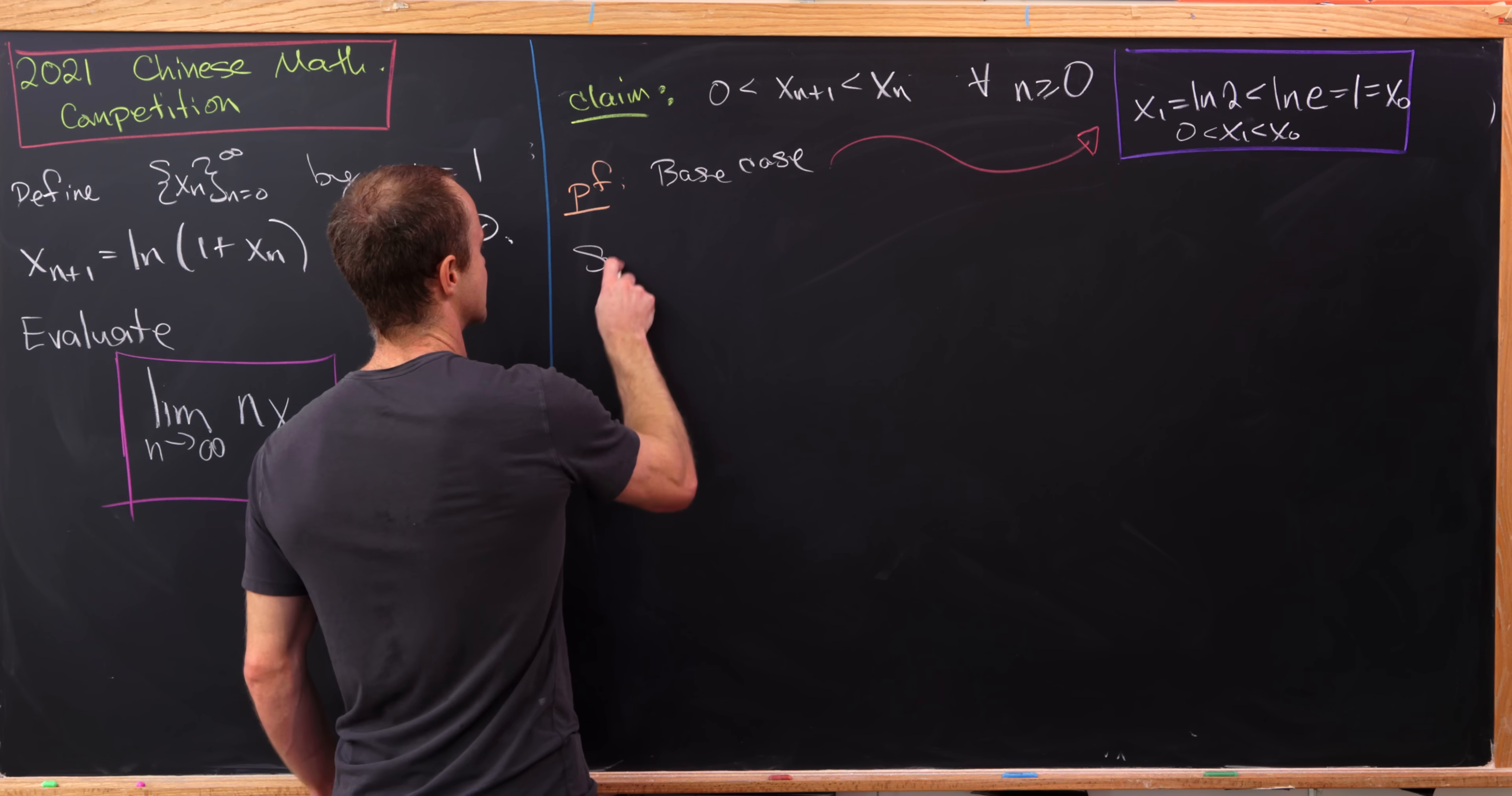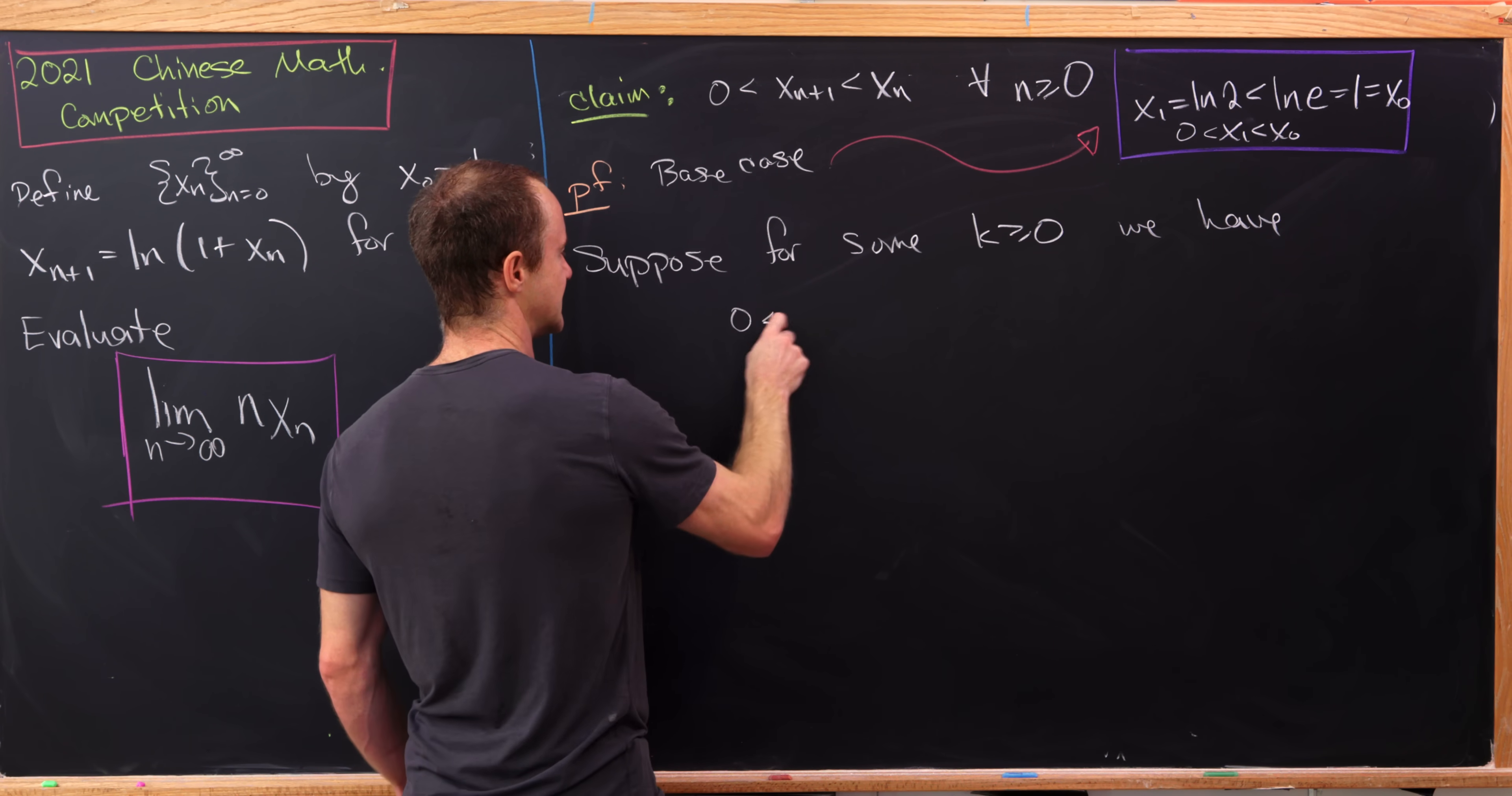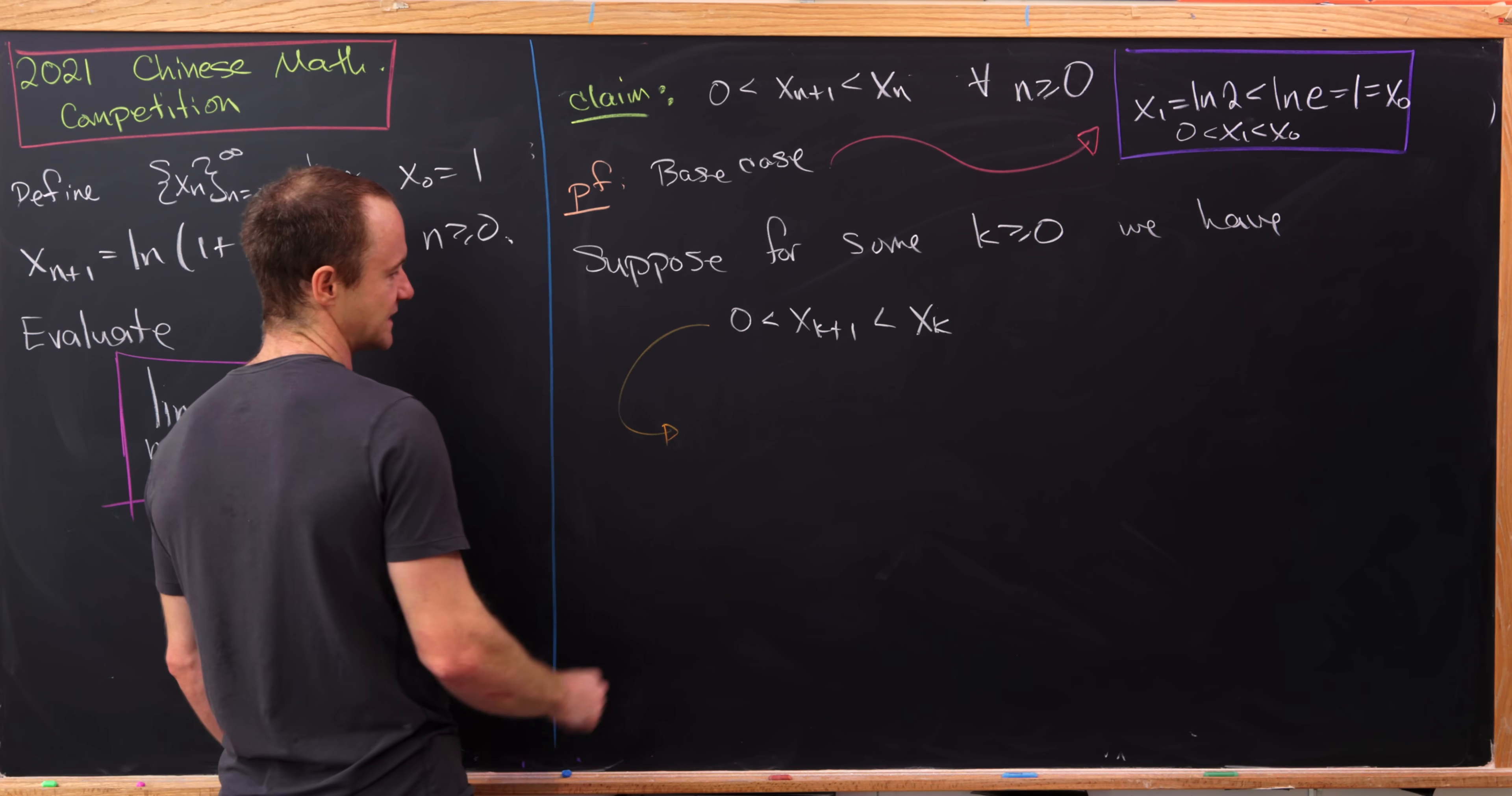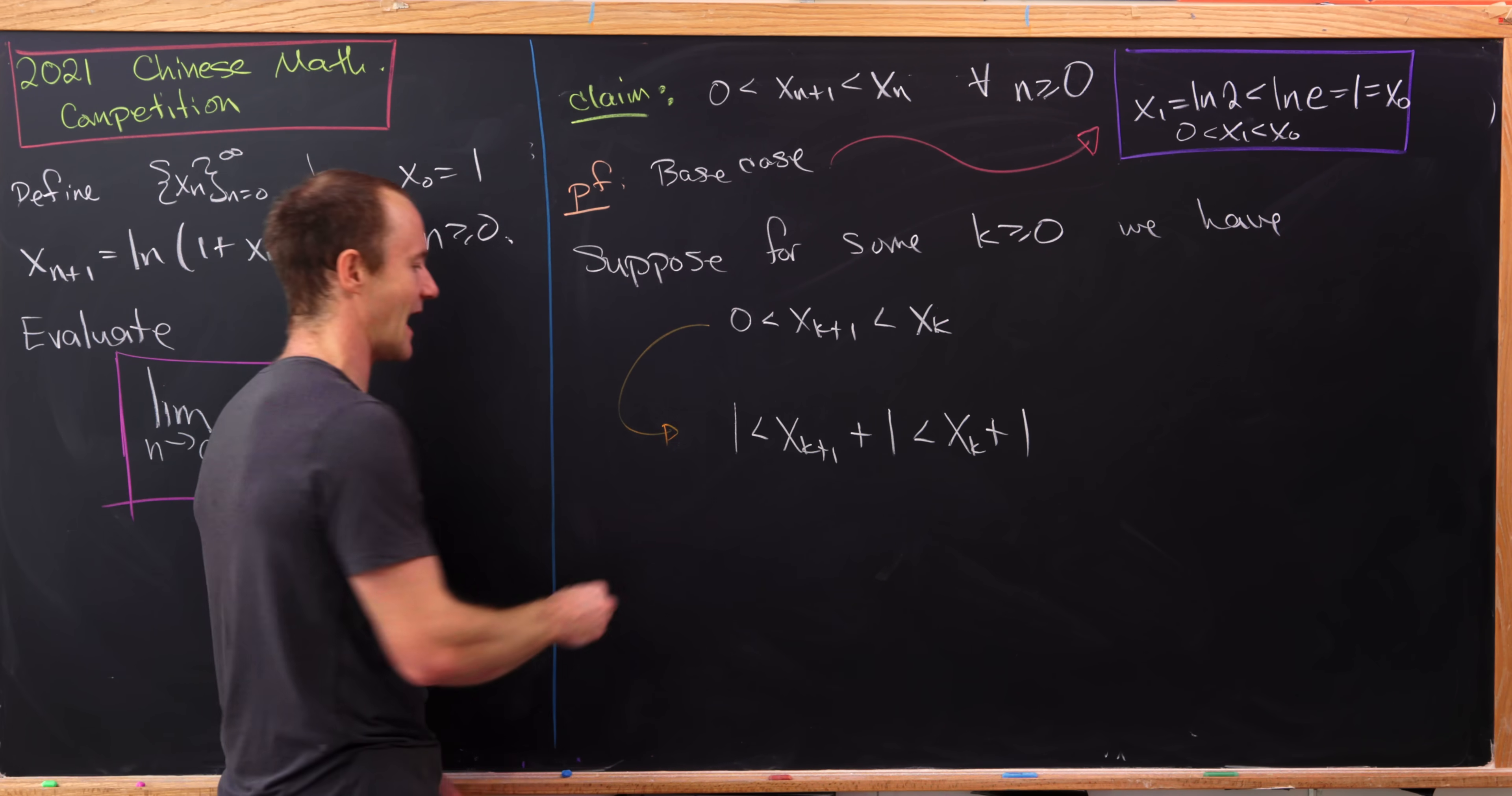So now let's make an induction hypothesis. We'll suppose for some k greater than or equal to 0, we have the statement holding. So in other words, 0 is less than x_{k+1}, which is less than x_k. And now we'll add 1 to all parts of this inequality. So we'll get 1 is less than x_{k+1} plus 1, which is less than x_k plus 1.